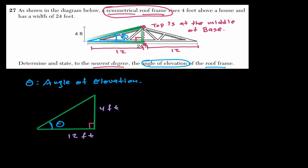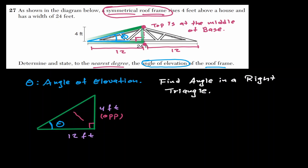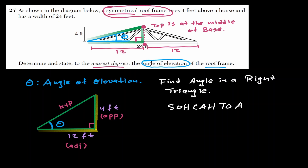Now that we have a right triangle and want to find an angle, we have to use trigonometric functions. The side opposite the reference angle is four, the side opposite 90 degrees is the hypotenuse, and the remaining side is the adjacent, which is 12. We have information about both adjacent and opposite, so using SOH-CAH-TOA the function that uses opposite and adjacent is tangent.